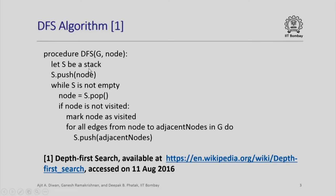Let S be a stack. All that we do is we push the node onto the stack. G is the graph and node is the starting node, so the starting node is pushed on the stack first. While S is not empty, we do the following: we pop the node from the stack — which currently is the first node — and if the node is not visited, which initially is true for the first node, we mark the node as visited and we actually visit the node by looking at all the edges from that node to all the adjacent nodes in G.